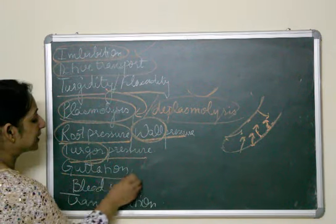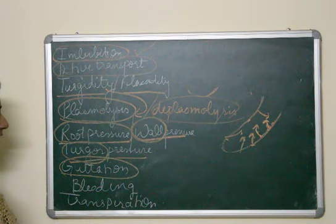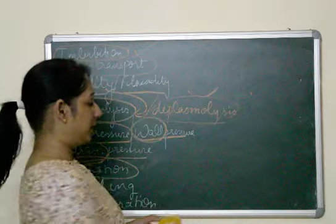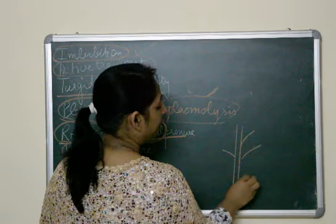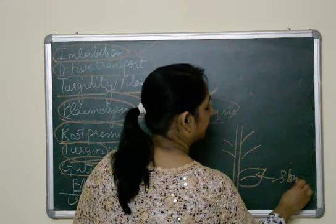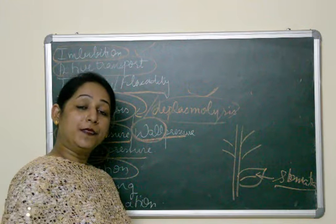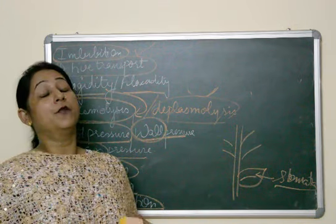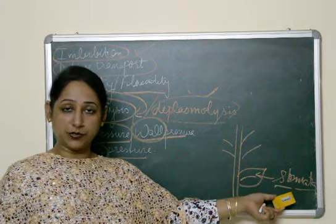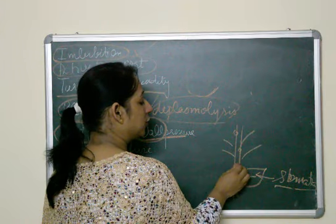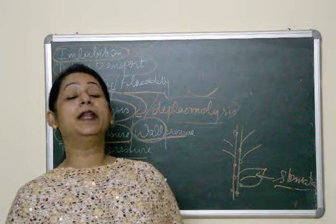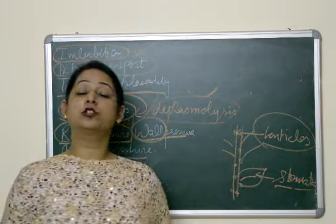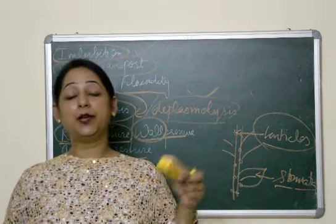Next is guttation. There are three openings present on plants. The first opening is stomata, which is present on the leaves. Stomata undergo the loss of water in the form of water vapor by the process of transpiration — loss of water as water vapors from the aerial parts of the plant through stomata is known as transpiration. The second opening is the permanent opening on woody stems known as lenticels. Lenticels also perform transpiration — known as lenticular transpiration.